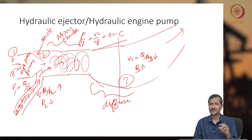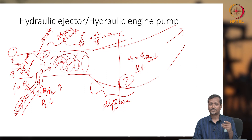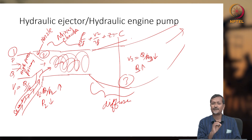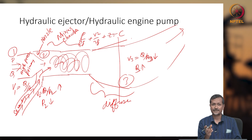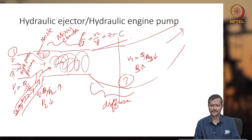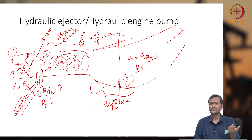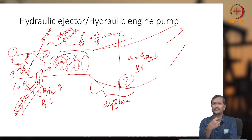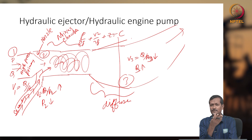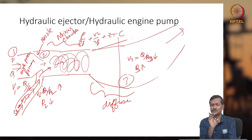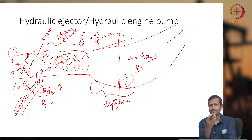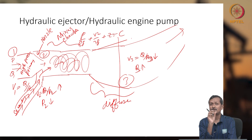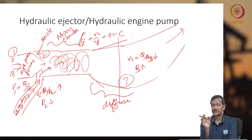There are several terms for this device: hydraulic ejector, jet pump, eductor, ejector. Whenever you study this topic, check the alternative names because in exams, different terms may be used. Similarly, sucker rod pump systems have different names: beam pump, nodding donkey, SRP. If an examiner uses a different term, you should still recognize it. So always check alternative names for any artificial lifting system.